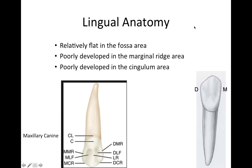Lingual anatomy is one way to distinguish the mandibular canine from the maxillary canine. The maxillary canine has very distinctive lingual anatomy with a prominent lingual ridge, whereas the mandibular canine is pretty flat on the lingual side — relatively flat in the fossa area, poorly developed marginal ridges, and a poorly developed cingulum. This is another way to distinguish upper canines from lower canines.